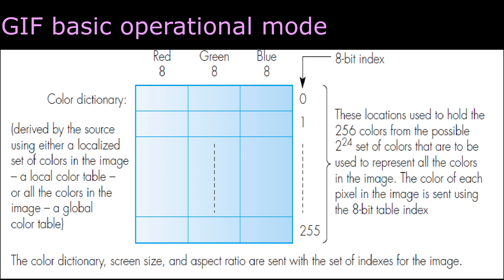In GIF basic operational mode, the color dictionary holds 256 colors from the 2 power 24 possible colors. Each color holds a 24-bit pixel value: 8-bit corresponds to red, 8-bit corresponds to green, and 8-bit corresponds to blue.